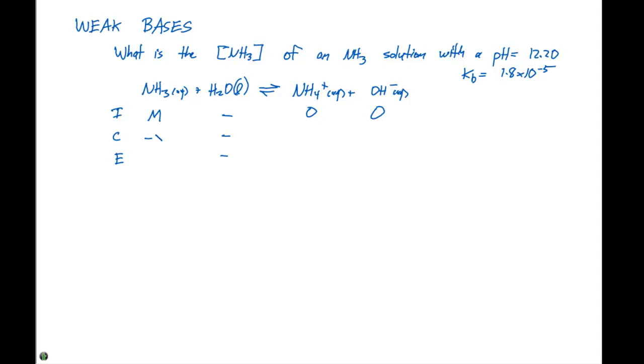So our change is gonna be minus x for the NH3, plus x for the NH4 plus, and plus x for the OH minus. So at equilibrium our concentrations are gonna be represented by x for the NH4 plus and the OH minus.